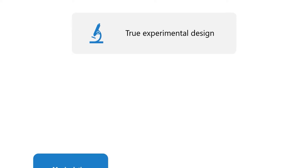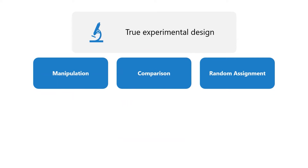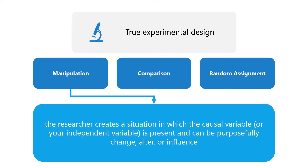The three essential ingredients of a true experimental design are manipulation, comparison, and random assignment.